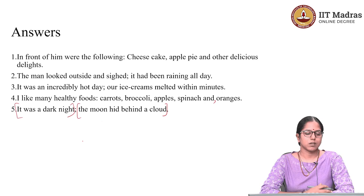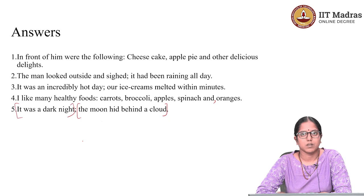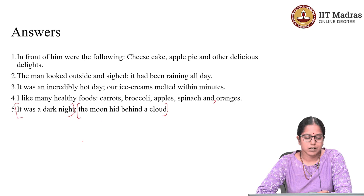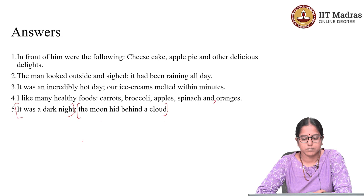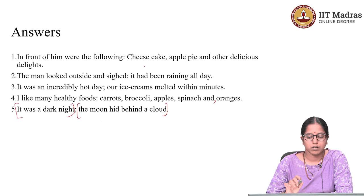Let us look at the answers. The first sentence: 'In front of him were the following:' — we use a colon because we are introducing a list. Then: 'cheesecake, apple pie and other delicious delights.' When there are multiple items in a list, you separate them with commas except before the last item. Therefore, there is a comma between cheesecake and apple pie but not between apple pie and other delicious delights.